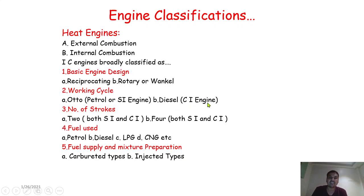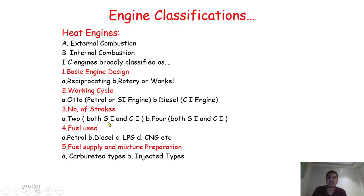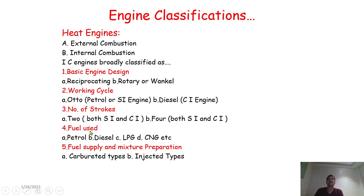The third classification basis is number of strokes, classified as two-stroke engine and four-stroke engine — both in SI and CI types. SI means spark ignition, generally petrol engines; CI means compression ignition, generally diesel engines. Whenever the terms SI and CI are used going forward, remember: SI means petrol engine, CI means diesel engine.